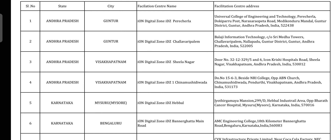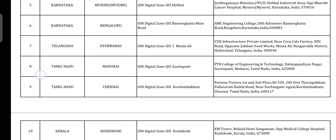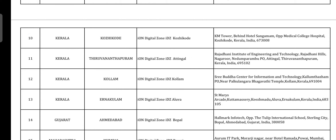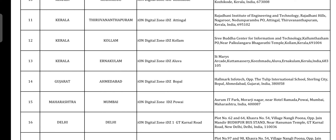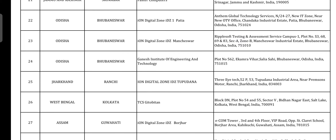In Andhra Pradesh there are four cities: Guntur and Visakhapatnam (two centers each). In Karnataka there are two centers: Mysuru and Bengaluru. Telangana: Hyderabad. Tamil Nadu: Madurai and Chennai. Kerala: Kozhikode, Thiruvananthapuram, and two more Kerala centers. Gujarat: Ahmedabad. Maharashtra: Mumbai. Delhi: three centers. Rajasthan: Jaipur. Himachal Pradesh: Shimla. You can find this PDF on our Telegram channel and YouTube channel.